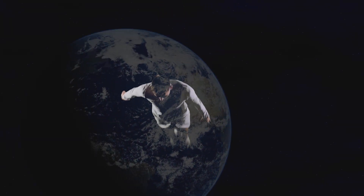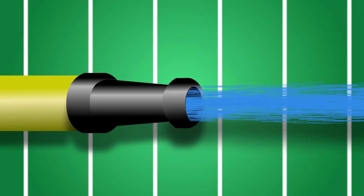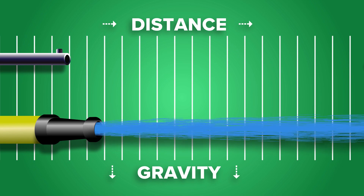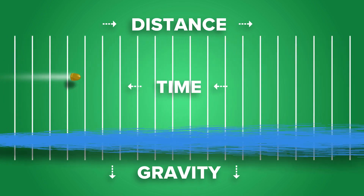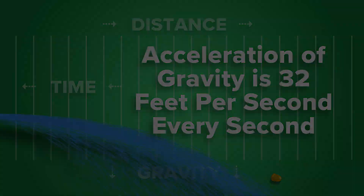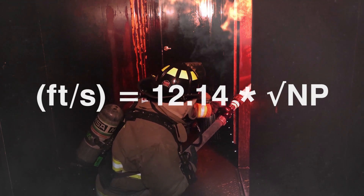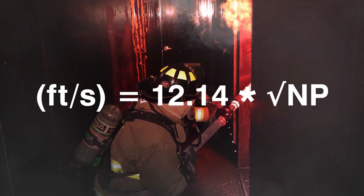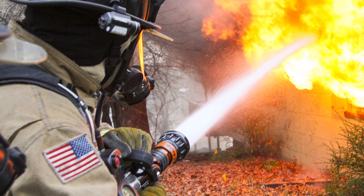What goes up must come down. This is a law of physics which governs all things on planet Earth. Whether it's a bullet from a gun or water from a nozzle, when something is traveling through the air and is affected by gravity, it begins to fall at a rate of 32.2 feet per second before it eventually hits the ground. This is why the water's velocity from a nozzle is important, because that water needs enough velocity flow to fight against gravity to be usable in a firefighting environment.